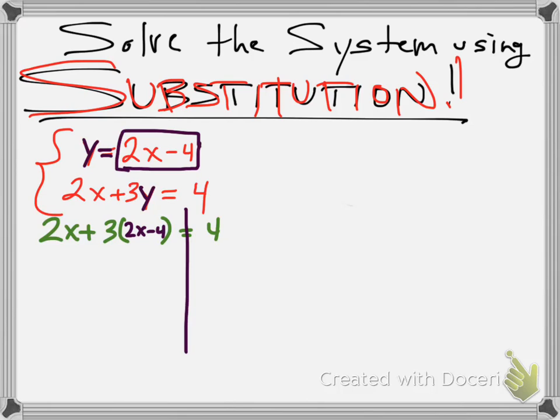And now we solve it just like we were solving a problem. So we got 2x plus 3 times 2x, which is 6x. And 3 times minus 4 is minus 12 equals 4. That's 8x minus 12 equals 4.